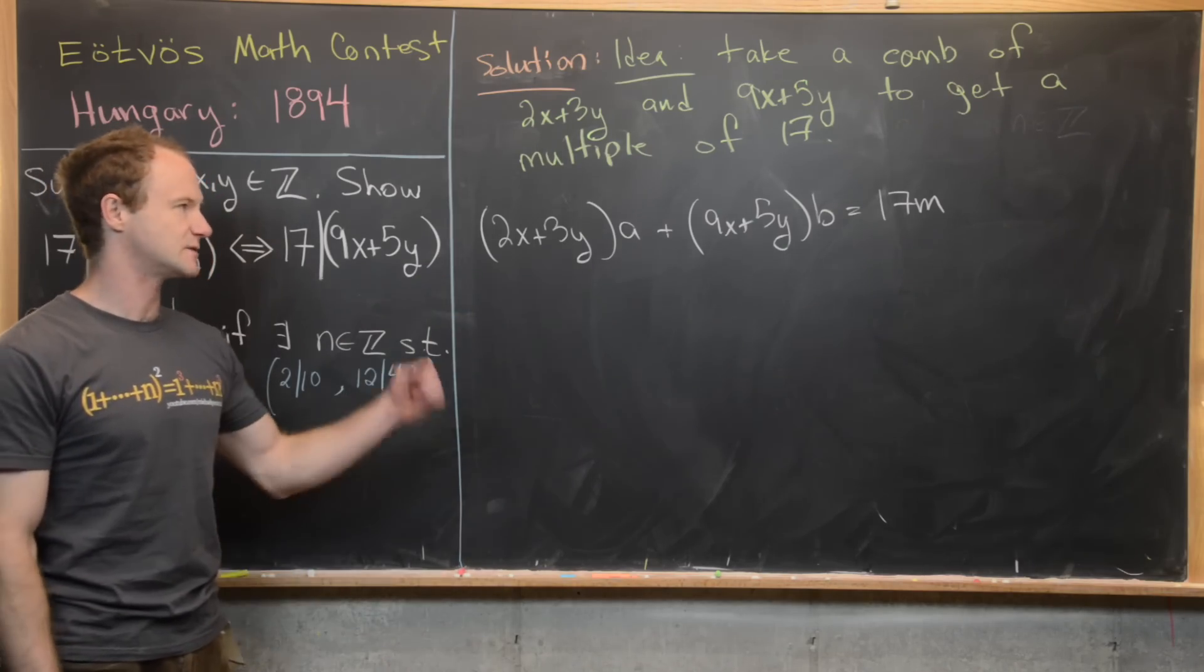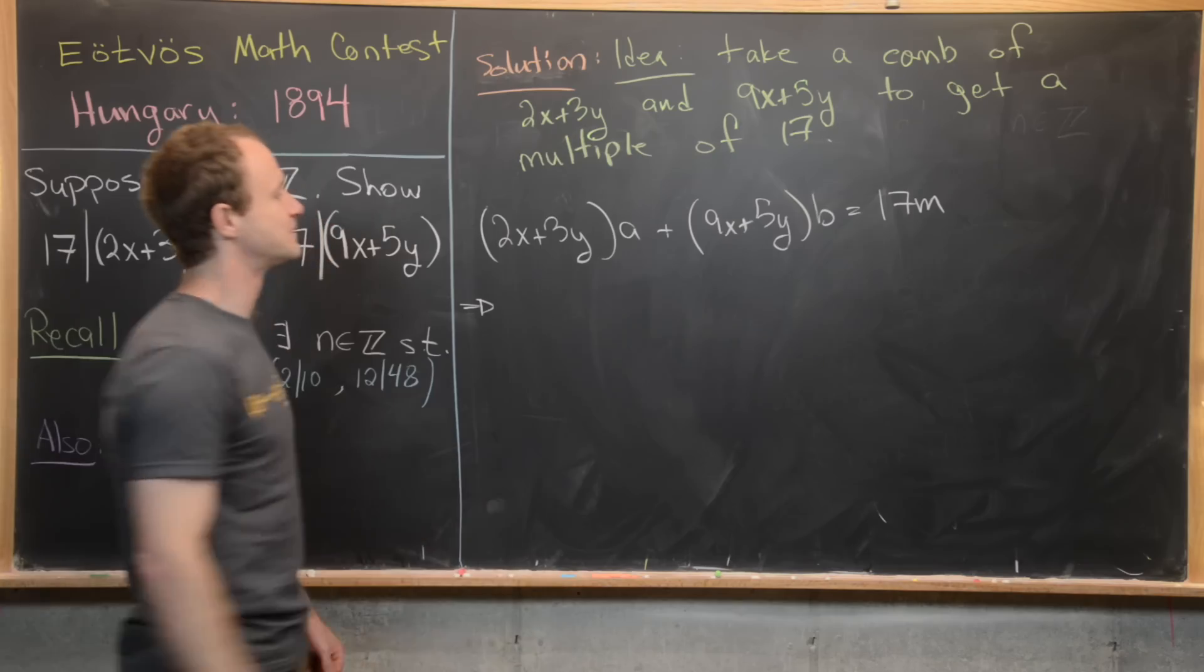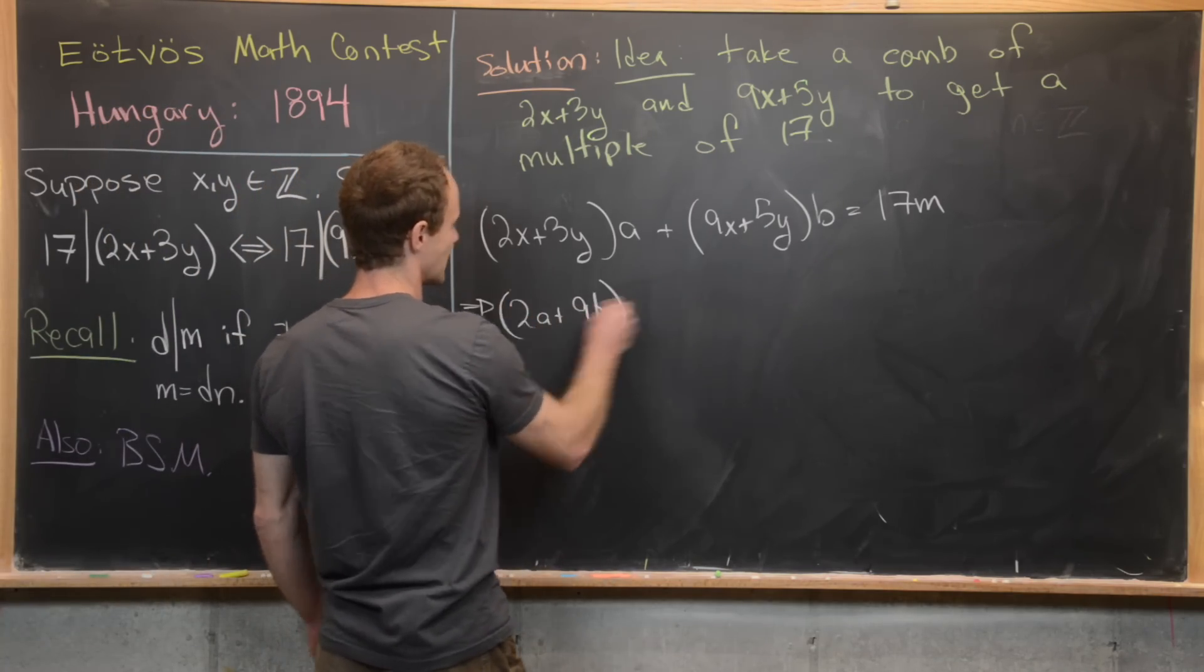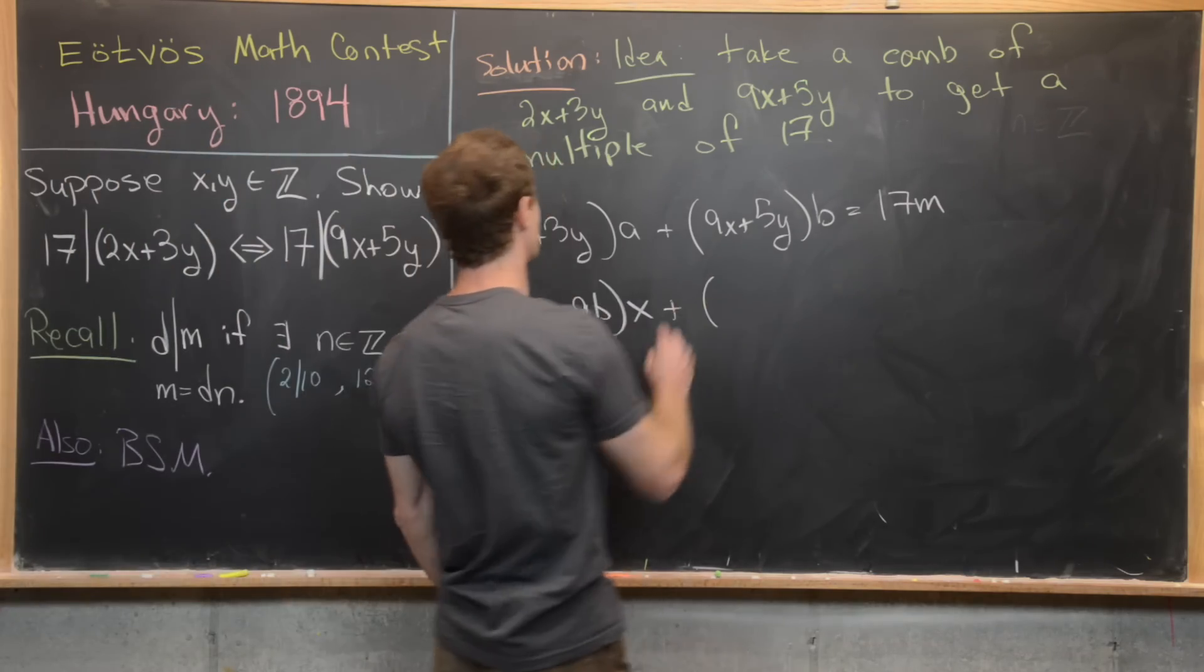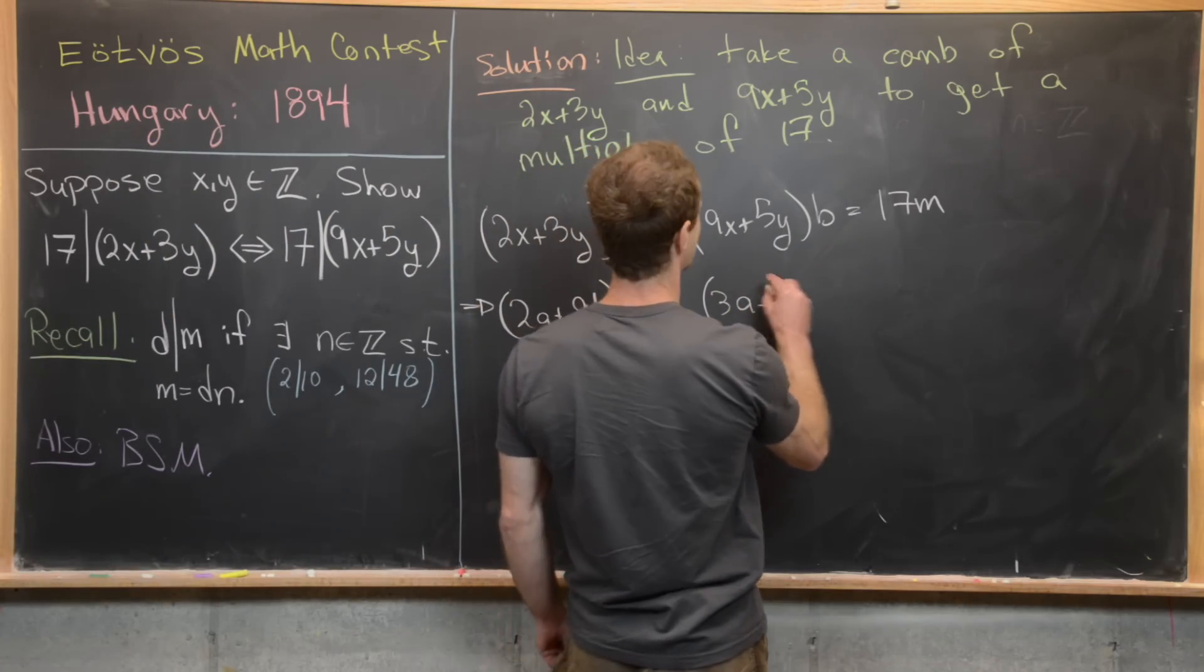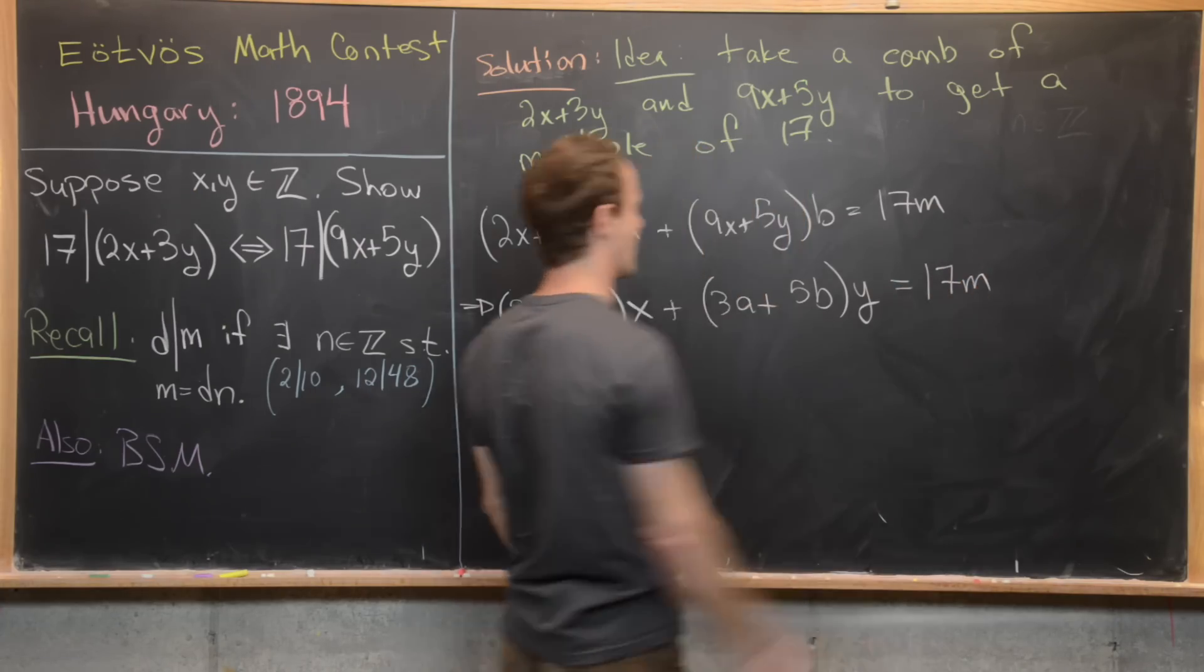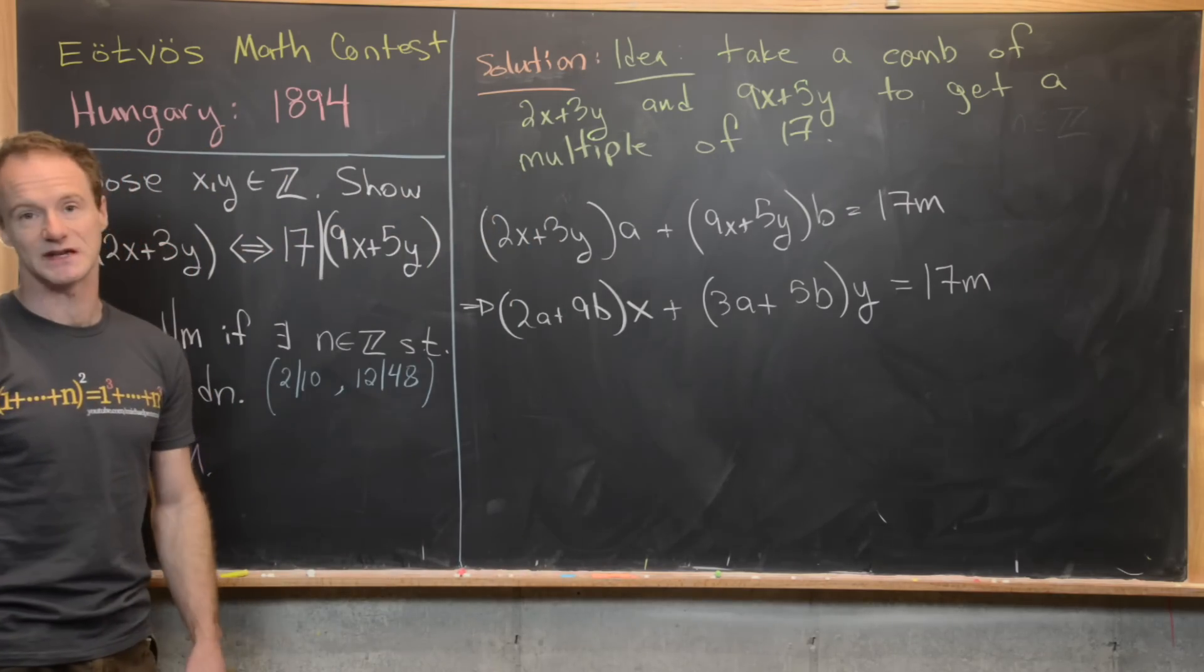So as such, we'll rewrite this in a way that makes it easier to solve for a and b. So I'm going to combine like terms with the x terms and the y terms. So combining the x terms, we will get 2a plus 9b times x plus combining the y terms, we'll get 3a plus 5b times y. And remember, our goal is for that to be a multiple of 17. So that needs to be like 17 times m.